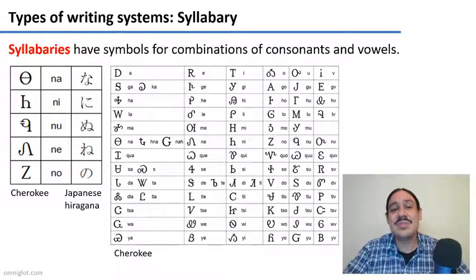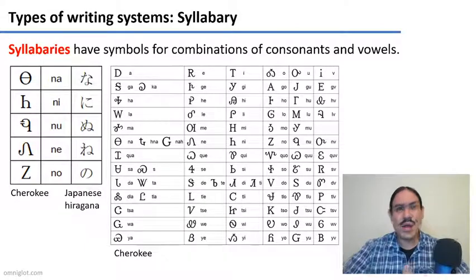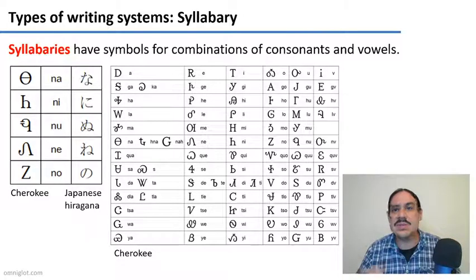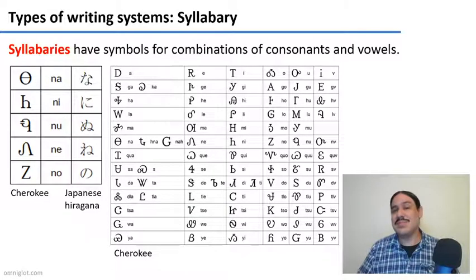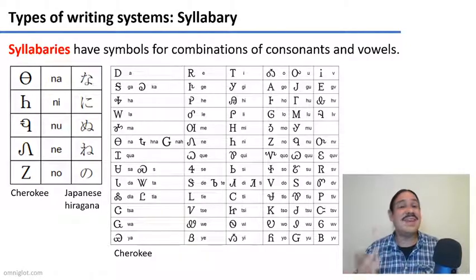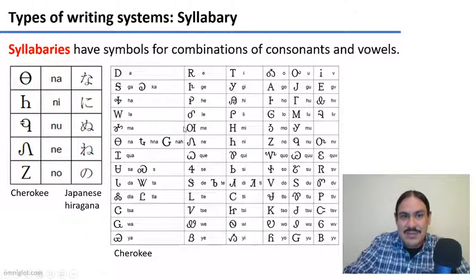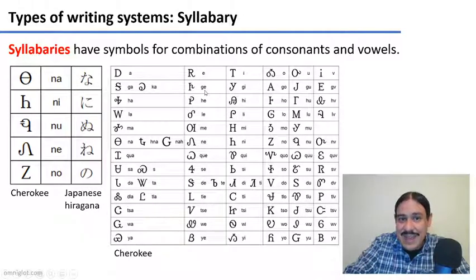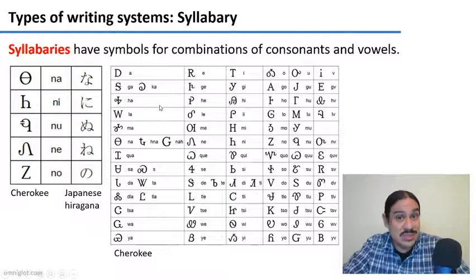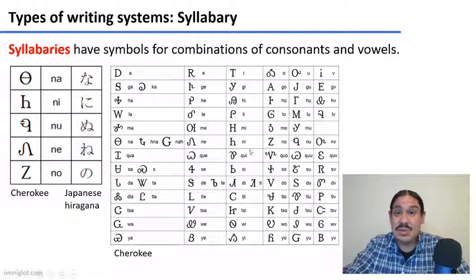Cherokee was invented by a person called Sequoyah in the 1810s and 1820s. He saw how the United States had all these treaties on paper and wanted that kind of power — the ability to make claims based on written documents, which seemed so important to U.S. culture. With the aid of his daughter, who had better hearing and helped him distinguish between the different syllables of Cherokee, he designed a syllabary. Each symbol represents an entire syllable — for example, symbols for 'he' and 'le' share nothing visually. The Cherokee community uses this writing system to this day and is extremely proud of it — you can type it on your computer, cell phone, and there is a Cherokee Wikipedia.